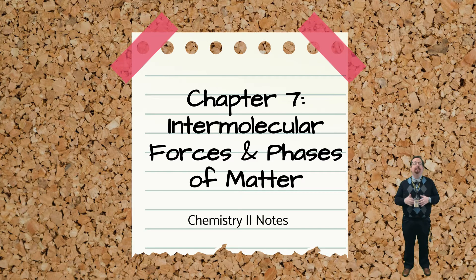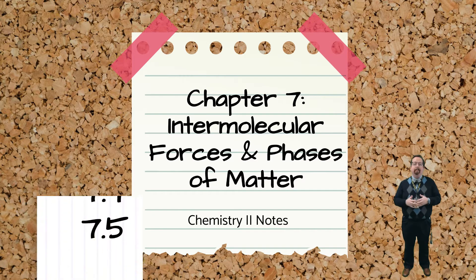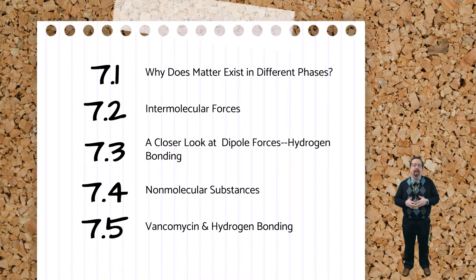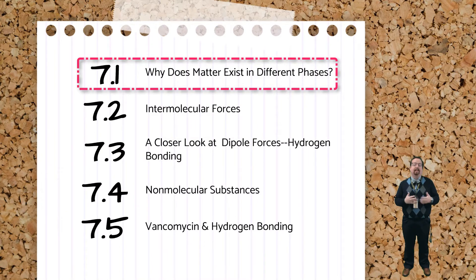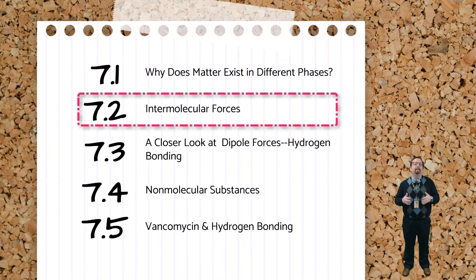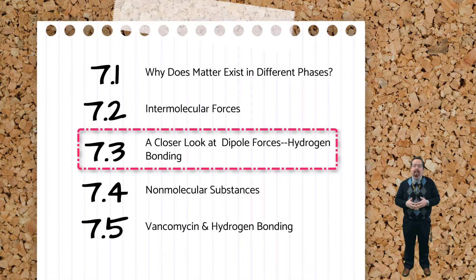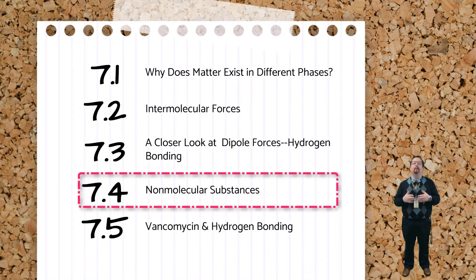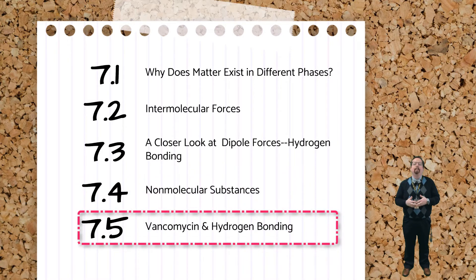Hey folks, welcome to another set of Chemistry 2 video notes. Today we're going to be covering Chapter 7, which is all about intermolecular forces and the phases of matter. In this set of notes, we're going to talk about why matter exists in different phases, what intermolecular forces there are, hydrogen bonding, non-molecular substances and what holds them together, and the beautiful hydrogen bonding effects of a very important antibiotic.